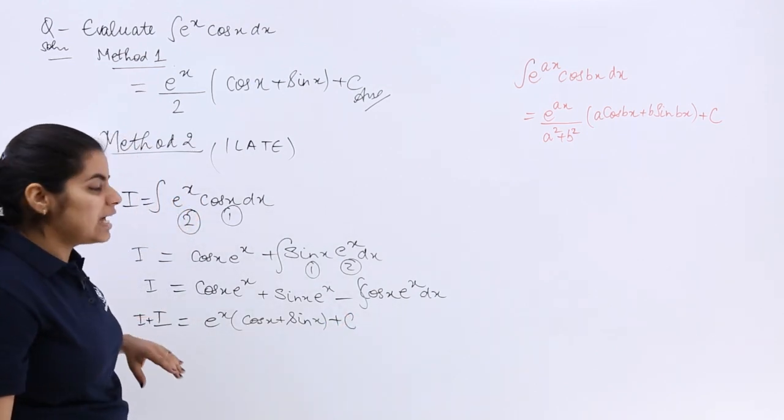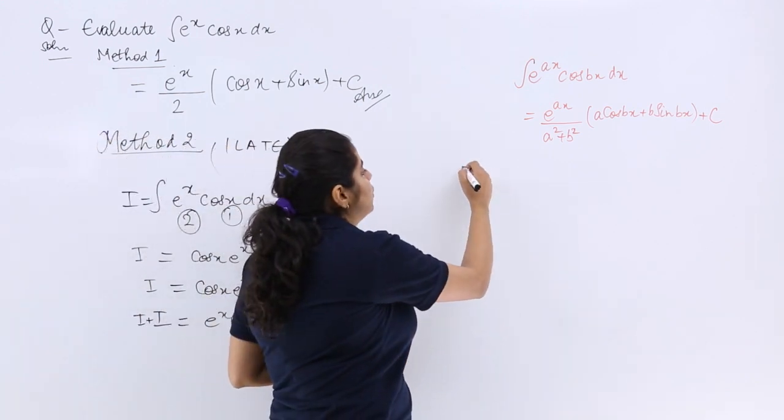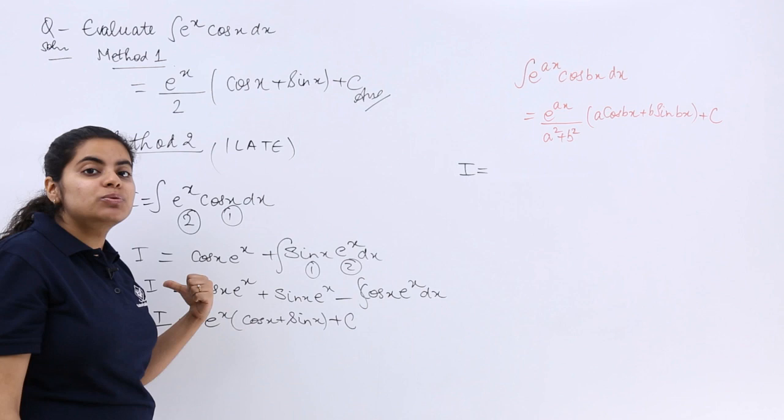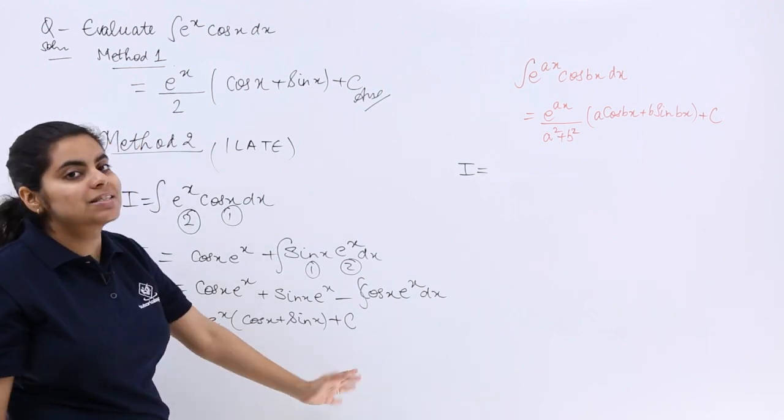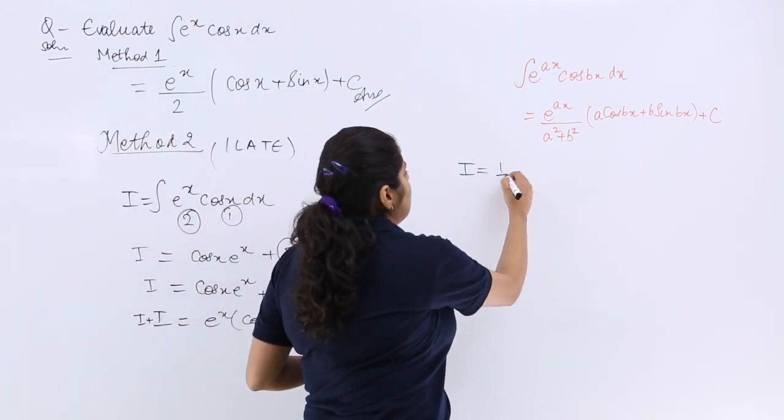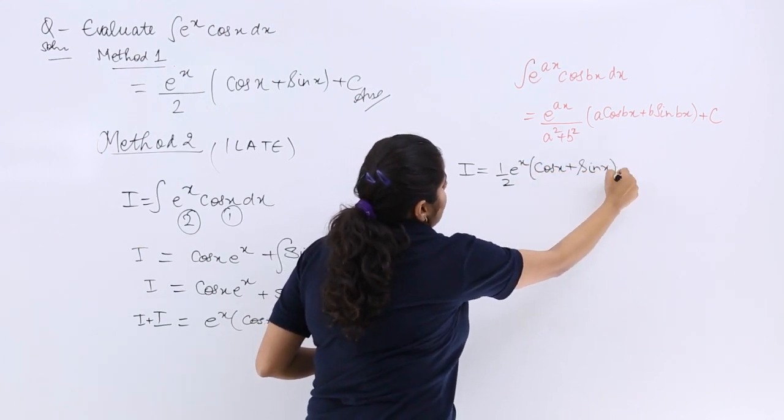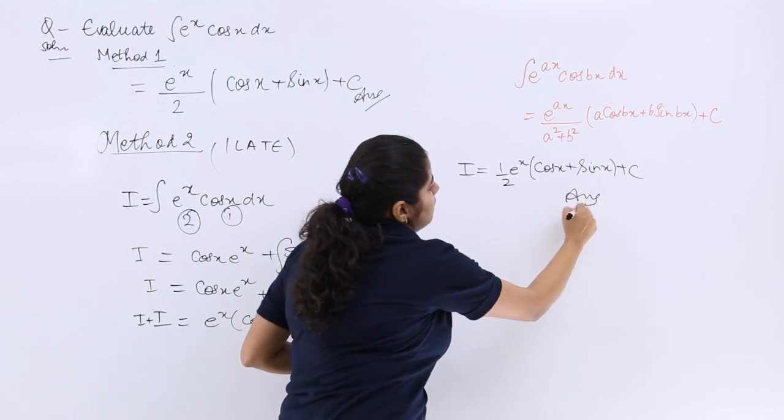Now see, I plus I is 2I but you do not need 2I, you need only I. That means that 2 which was multiplied here goes to the other side becomes divide. So it becomes 1 by 2 e raised to the power x, cos x plus sin x, plus c as the answer.